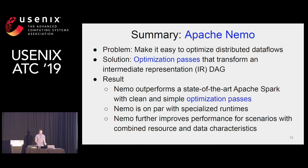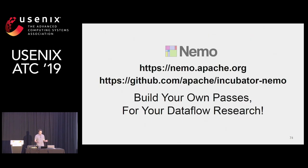In summary, Apache Nemo addresses the problem of making it easy to optimize distributed data flows. Our solution is optimization passes that transform an intermediate representation DAG. Results show that Nemo outperforms Apache Spark with clean and simple optimization passes, is on par with specialized runtimes, and further improves performance for scenarios with combined resource and data characteristics. We hope you find Nemo useful and use it to build your own passes for your data flow research.